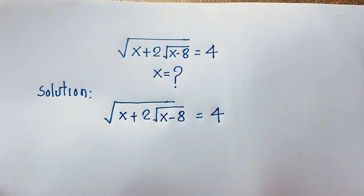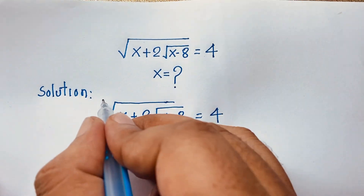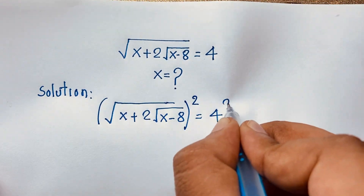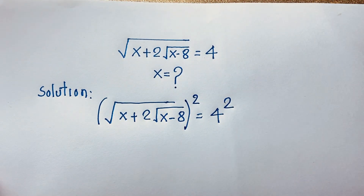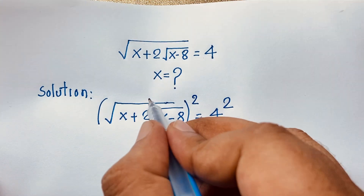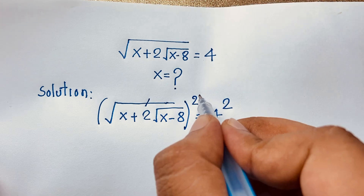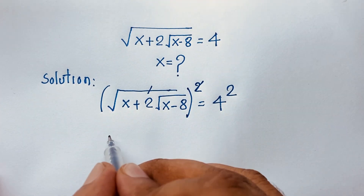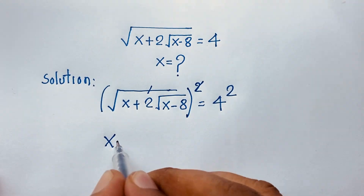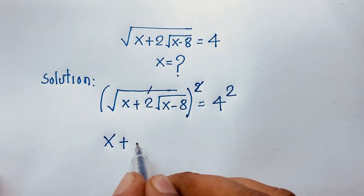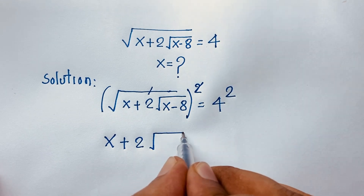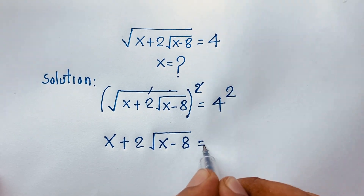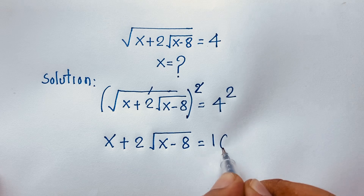Now at this moment, I square both sides. You can see easily this square root and this square are cancelled. We are finding out here: x plus 2 square root of (x minus 8) is equal to 16.